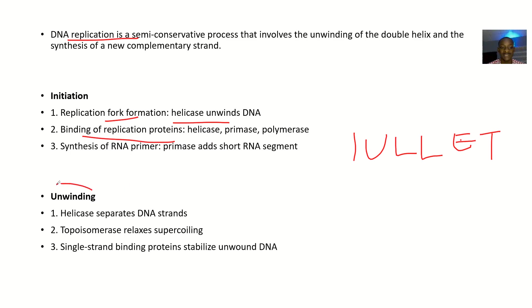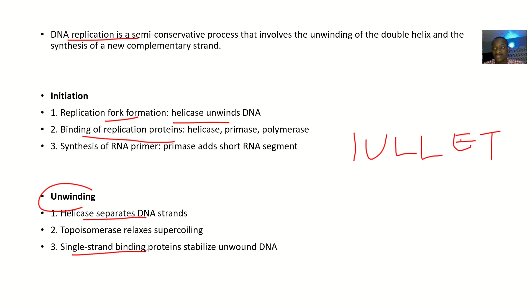The next process is unwinding. Helicase separates the DNA strands and unwinds it. Then topoisomerase relaxes the supercoiling — the DNA is coiled, so topoisomerase helps to relax it while helicase separates it. Single-strand binding proteins will stabilize the unwound DNA, so there will be no problems because there are things trying to stabilize it.